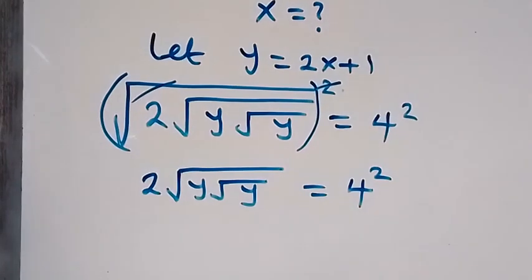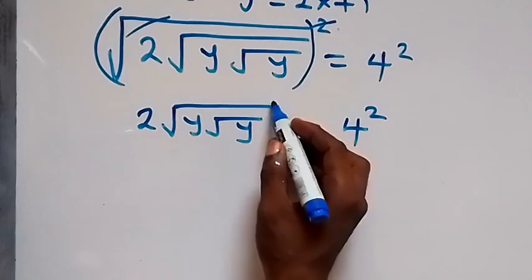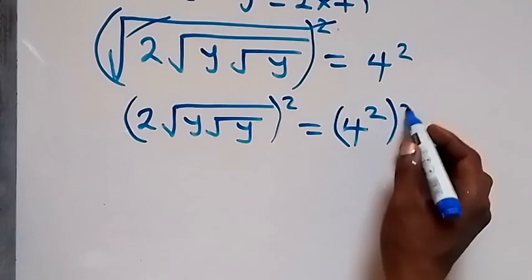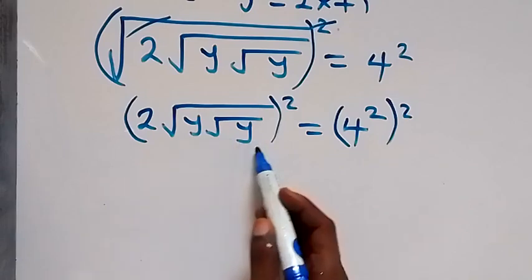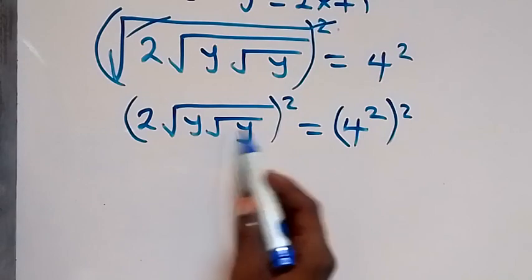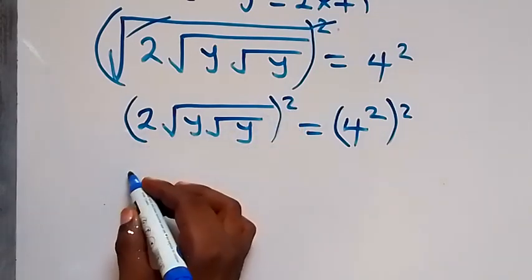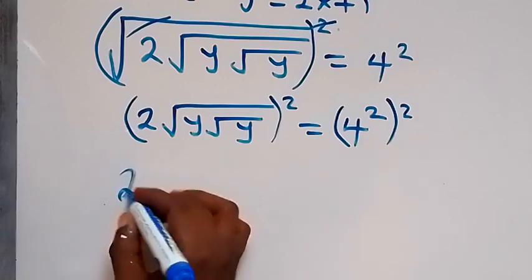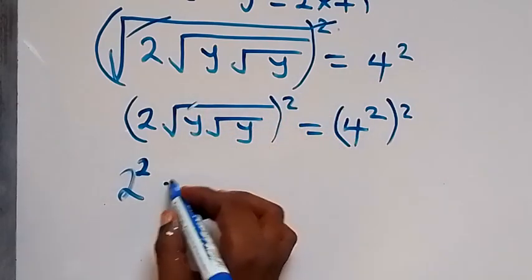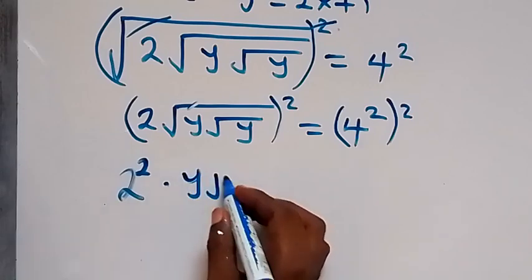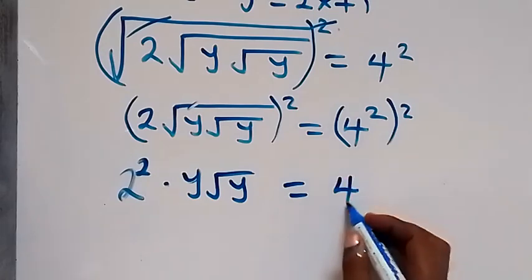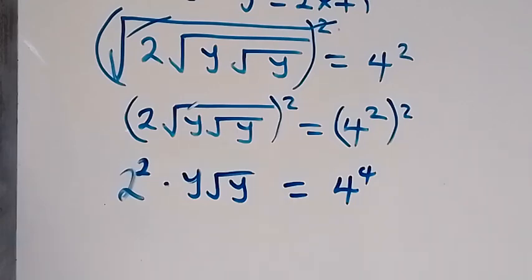From here we square both sides again. Squaring affects both terms: we have 2 and square root of y times square root of y. So 2 squared is 2², and the square cancels the square root, giving us times y times square root of y, which equals 4 raised to the power 4.